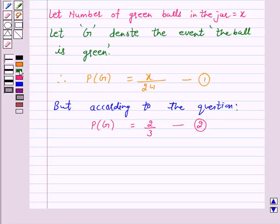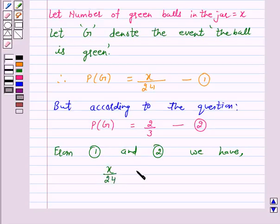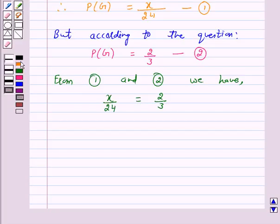So from 1 and 2 we have x upon 24 is equal to 2 upon 3. This implies x is equal to 2 upon 3 into 24, and this implies x is equal to 16.